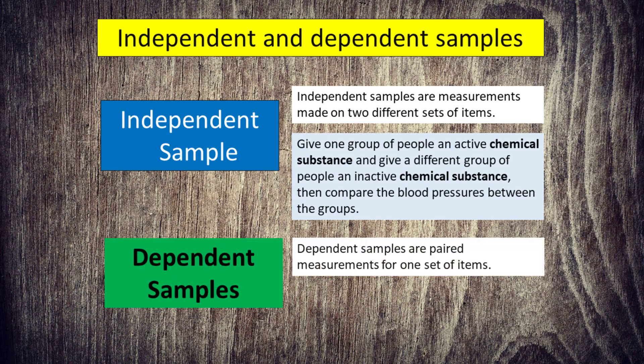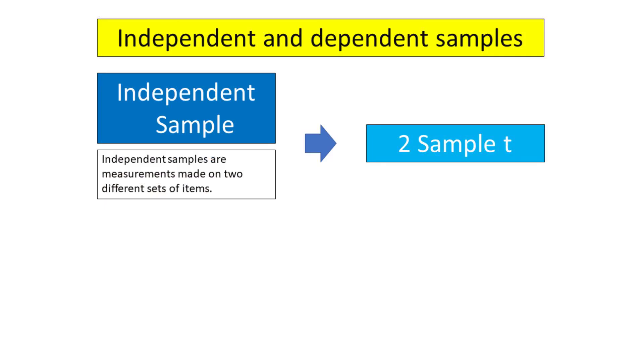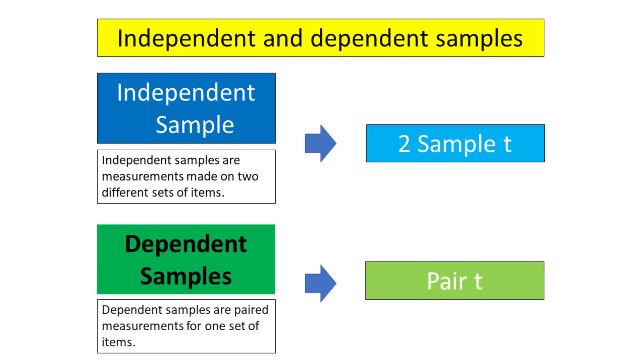Then compare the blood pressures between the groups. Furthermore, dependent samples are paired measurements for one set of items. For example, sample the blood pressures of the same people before and after they receive a dose. Two-sample t-test is used when the data of two samples are statistically independent, while the paired t-test is used when data is in the form of dependent samples.